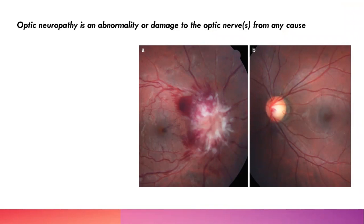I'm going to be showing you lots of pictures today. What I want you to appreciate is a normal optic nerve and an abnormal optic nerve to start with. We've talked about that approach in some of the previous lectures — just know what normal is so you can quickly identify what's abnormal, and then you can start to describe the abnormal one in some basic detail.